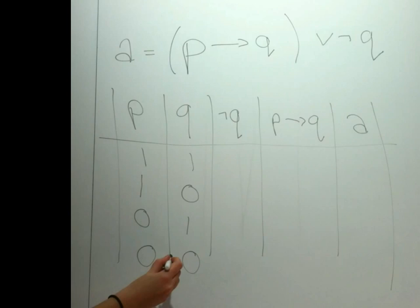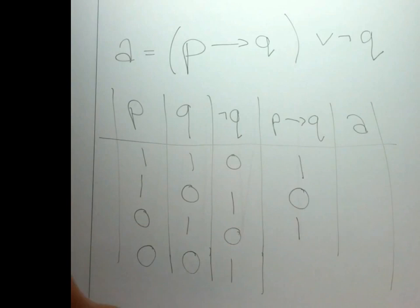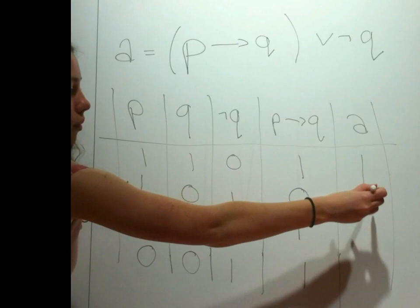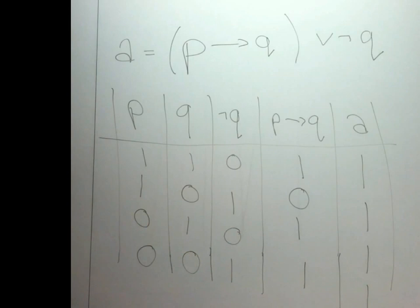Because the negation of Q is the opposite of Q, the values are false, true, false, true. For P implies Q: true implies true is true, true implies false is false, false implies true is true, and false implies false is true, as we worked out before. Now, if we look at the whole proposition — P implies Q, or not Q — we can say that true or false is true, false or true is true, true or false is true, and true or true is true. Therefore, this is a tautology because all of the values are true.